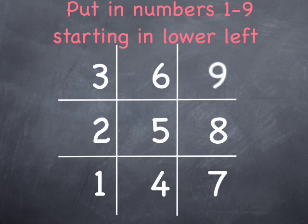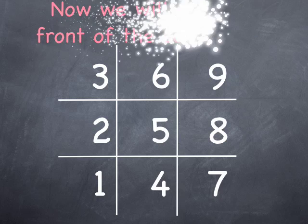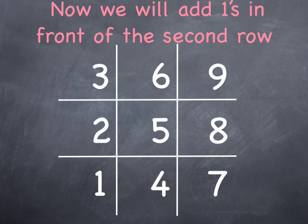These are the ones digits, the onesies of skip counting by threes. Now we can easily create the tens digits in front of them with a different pattern.